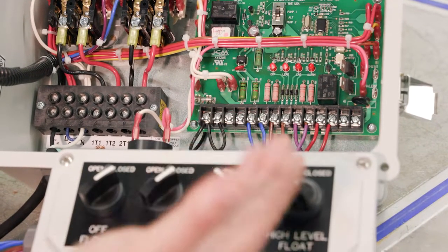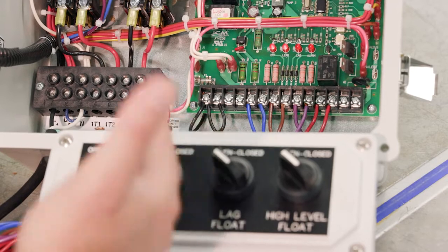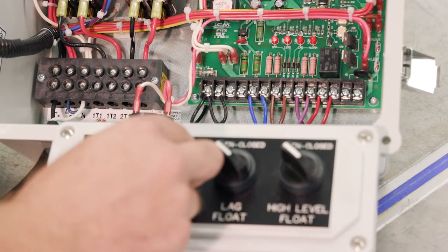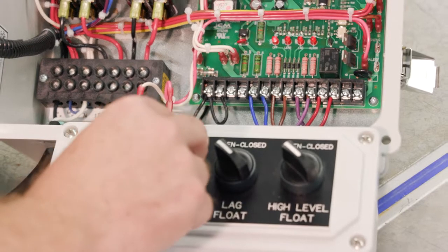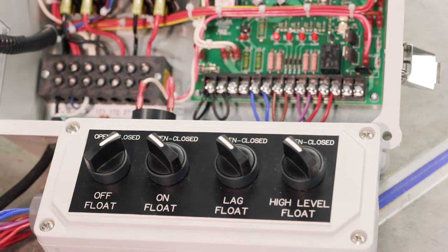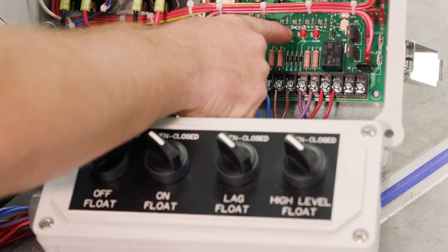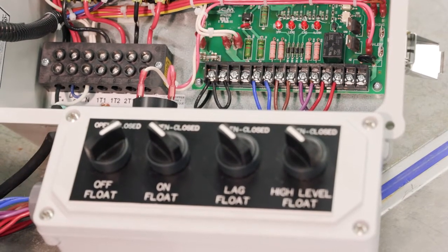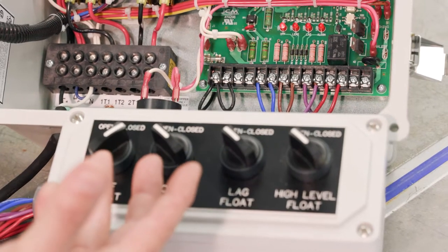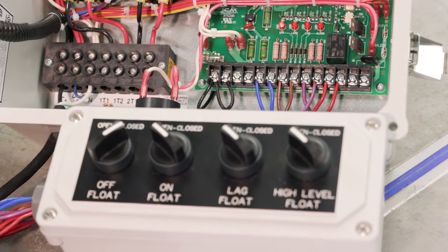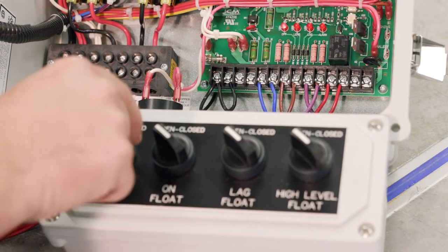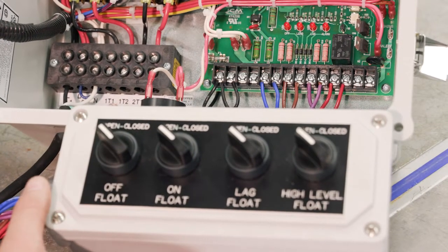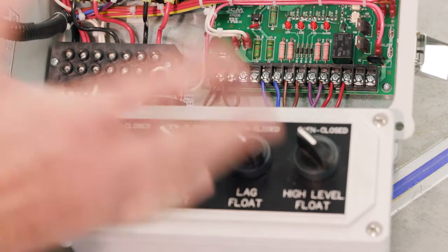Okay, so let's say in this case, pump two does its job. The tank is emptying. This float is going to close first. And notice what happens. The LED light goes off, but the pump is still running. So it continues to pump it down, and then it gets to the first float, which is the off float, turns the light off, and after a delay, it turns the pump off. So so far, so good.